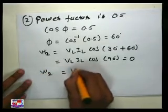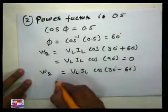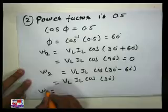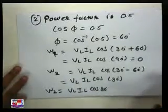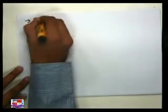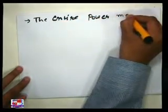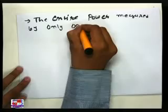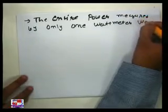And W2 = VL into IL into cos(30° − 60°) = VL into IL into cos(−30°) = VL into IL into cos(30°). So the conclusion is that the entire power will be measured by only one wattmeter — W2.